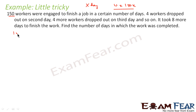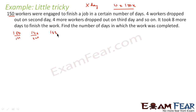Now the scene changes. In the first day 150 workers were there. In the second day four workers dropped, that is 146. On third day four more dropped, they become 142. On fourth day again four more workers dropped, so they become 138.